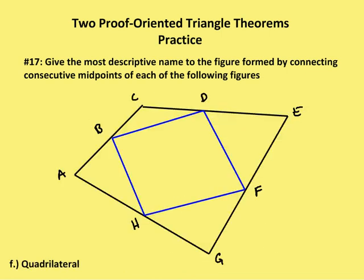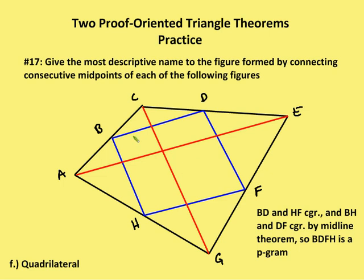Next I have a quadrilateral. I join the midpoints of the quadrilateral. Again, I use the midline theorem: BD and HF are congruent — they're half of AE. DF and BH are congruent — they're half of CG. So the most descriptive name for this figure, BDFH, is a parallelogram.